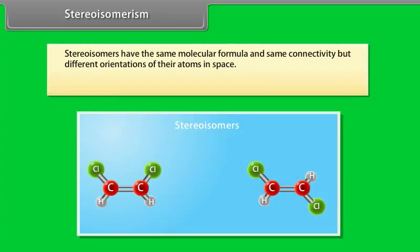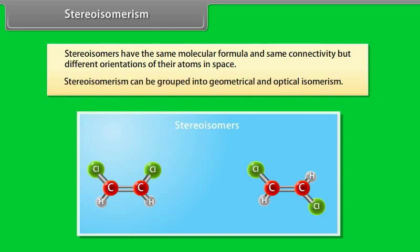Stereoisomers have the same molecular formula and same connectivity but different orientations of their atoms in space. Stereoisomerism can be grouped into geometrical and optical isomerism.